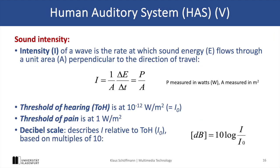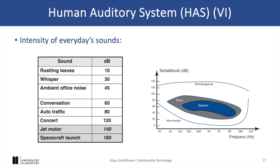Sound intensity refers to the rate at which sound energy flows through a given area, measured in watts per square meter. The threshold of hearing (TOH) starts at extremely low intensities, and the threshold of pain (TOP) is at much higher intensities. To quantify this, we use the decibel (dB) scale, which measures sound intensity relative to the threshold of hearing. A 10 dB increase represents a 10-fold increase in intensity. For reference, whispering is around 30 dB, a normal conversation is about 60 dB, and sounds above 120 dB, like at a concert or jet engine, can cause pain or damage our ears.